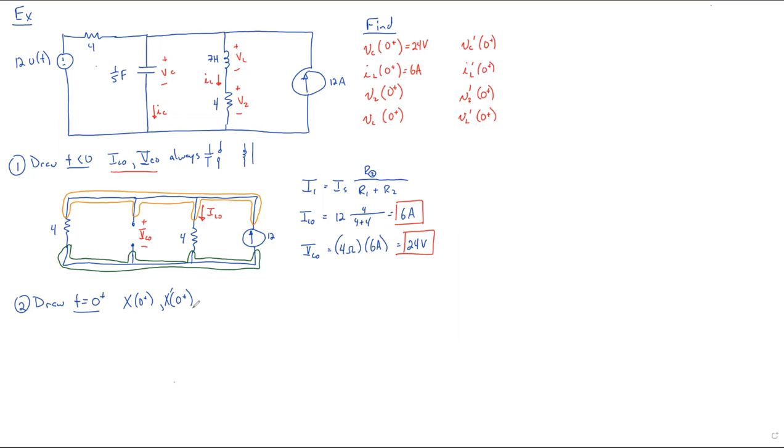In other words, we'll find Vc at zero plus and Vc prime at zero plus, or we'd find Vl at zero plus and Vl prime at zero plus. This particular problem, since we're just getting practice with it, we're going to find it for everything.